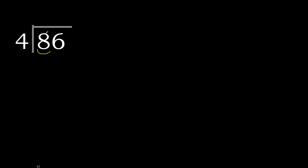4 multiplied by 3 is 12 — 12 is greater. Multiply by 2 is 8, which is not greater. 8 minus 8 equals 0.